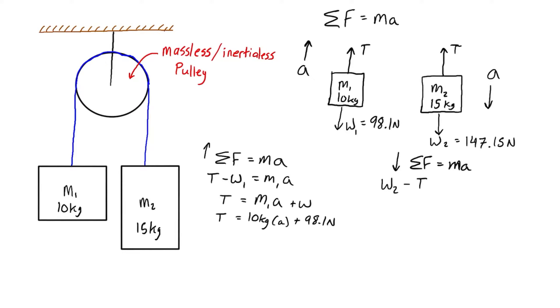Let's isolate for T. Bringing T to the other side, we have T equals w2 minus m2·a, which is 147.15 newtons minus 15 kilograms times a.